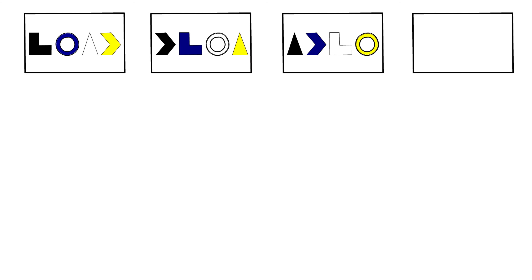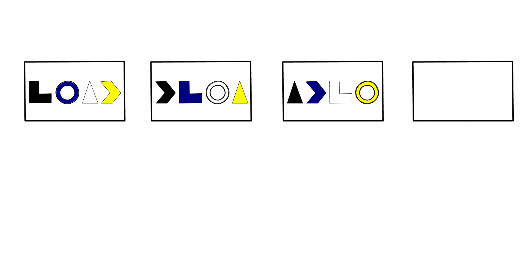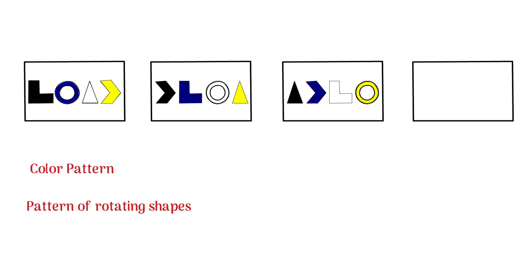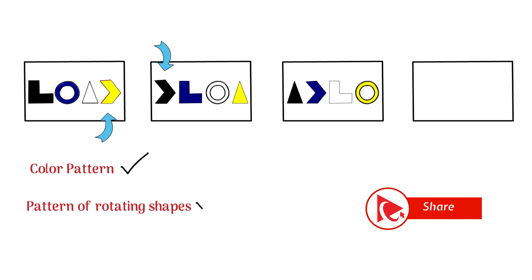In most types of problems there are typically multiple patterns present. For example, looking at the color pattern, the first shape inside each rectangle is always black, the second is always purple, the third is always white, and the rightmost shape is always yellow. A second pattern is the rotation of shapes: the rightmost shape in one rectangle always becomes the leftmost shape in the next rectangle. For example, the yellow arrow from the first rectangle becomes the black arrow in the second.